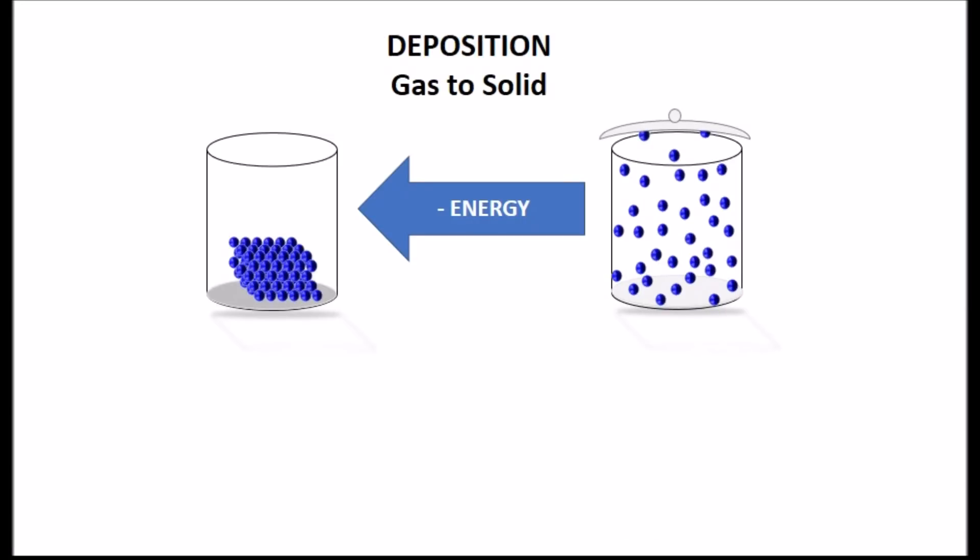Deposition occurs when we absorb the energy of a gas and it converts into a solid without passing through the liquid state. The basic example is iodine. Let's watch the video together.